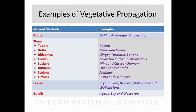In case of leaves, Bryophyllum, Begonia, Kalanchoe, and walking fern are examples in which leaves act as vegetative propagules. We already discussed Bryophyllum — on the leaf edges, small buds are developed, which develop roots that come into contact with the soil. They then detach from the parent leaf and develop as a new plant body. These are called leaf buds, developed on the leaf edges of Bryophyllum.